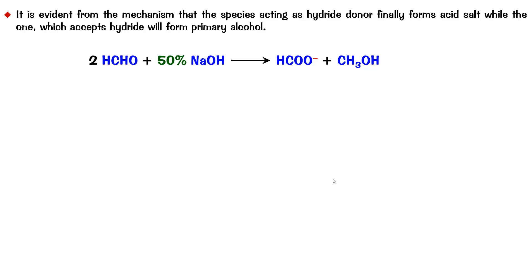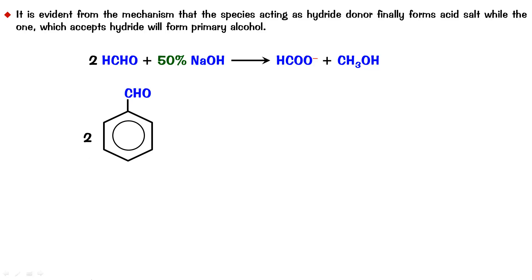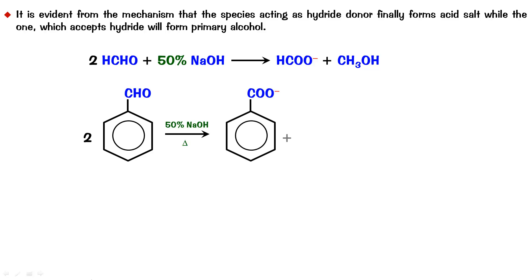Self-Cannizzaro is illustrated here. We can also take benzaldehyde. As you notice in benzaldehyde, you do possess an alpha carbon but there is no alpha hydrogen. So two molecules of benzaldehyde react to form benzoate and benzyl alcohol.